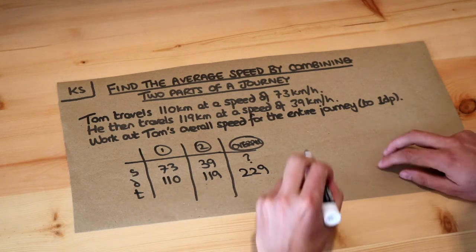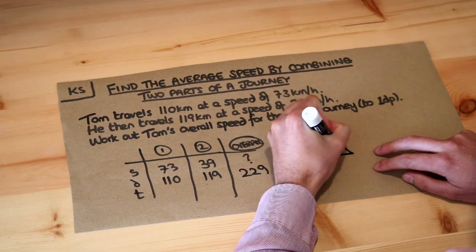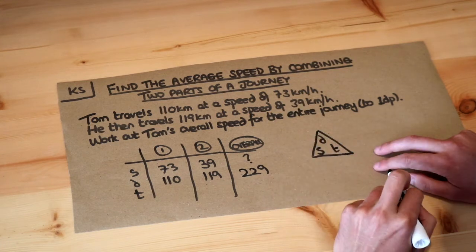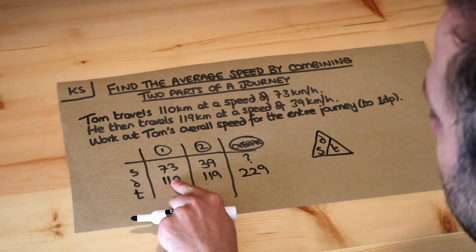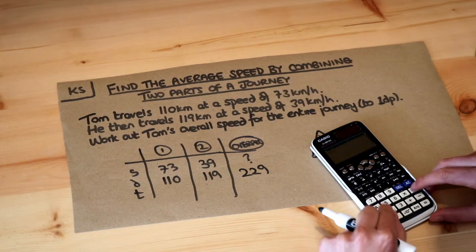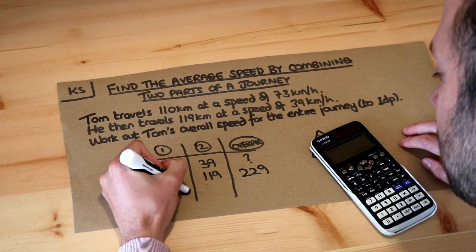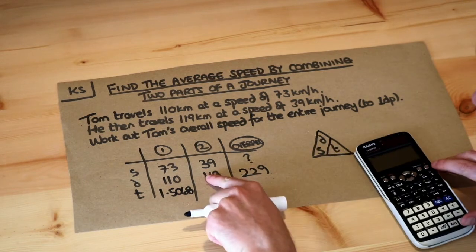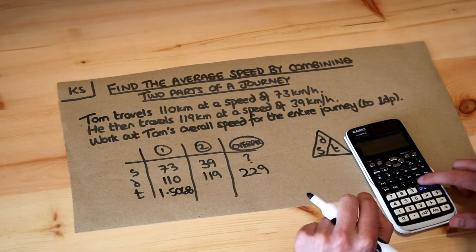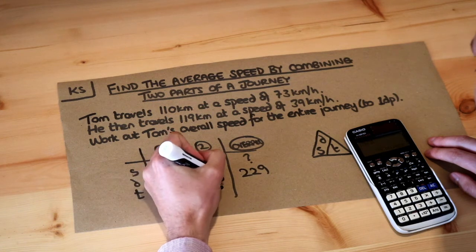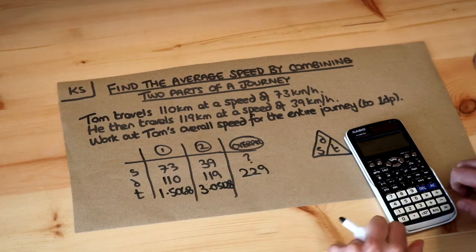We're going to have to work out the speed using the overall distance and overall time. At the moment we don't have any time, so let's use the speed-distance-time formula. Speed equals distance over time — using the triangle — and we want to work out time, so time equals distance over speed. For the first part: 110 divided by 73 gives 1.5068. For the second part: 119 divided by 39 gives 3.05128. Keep lots of decimal places to avoid rounding errors.